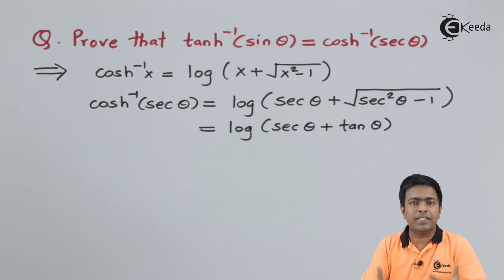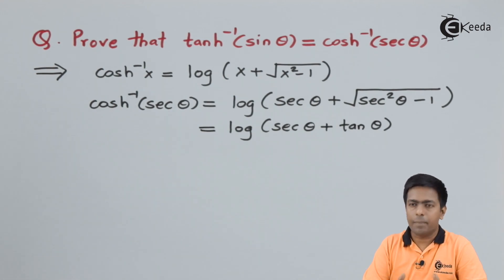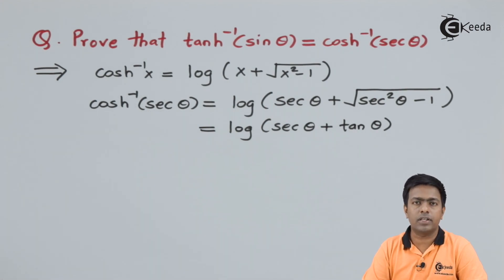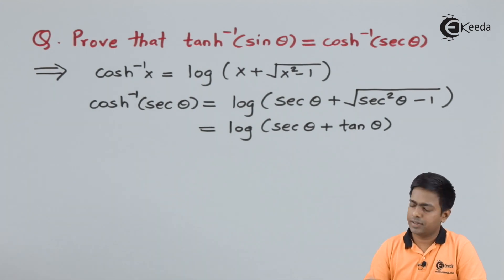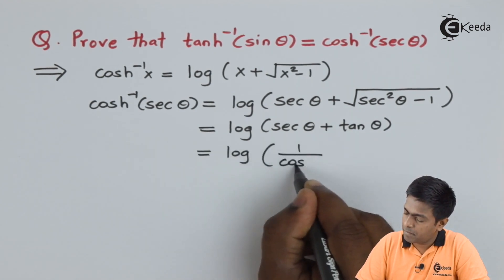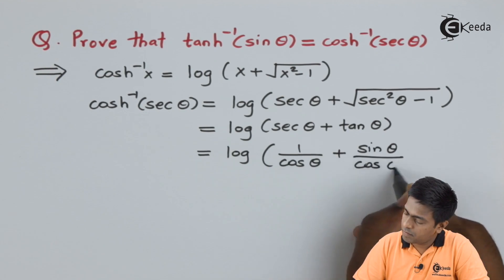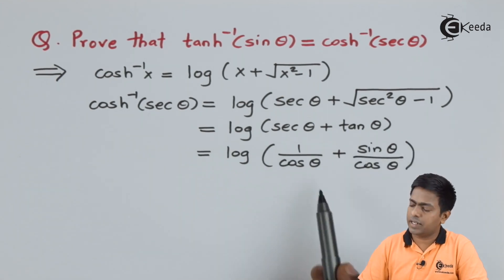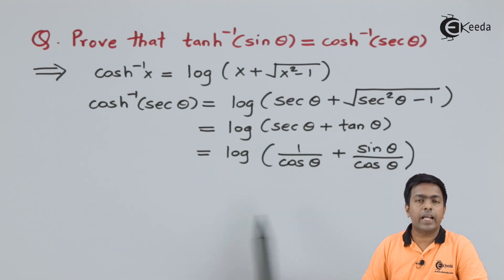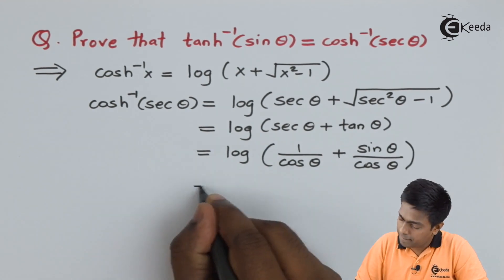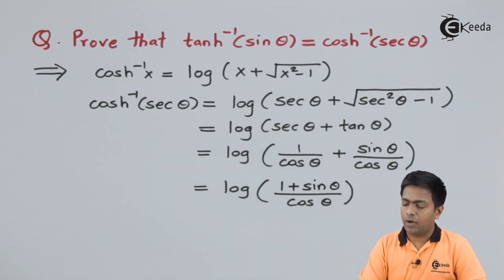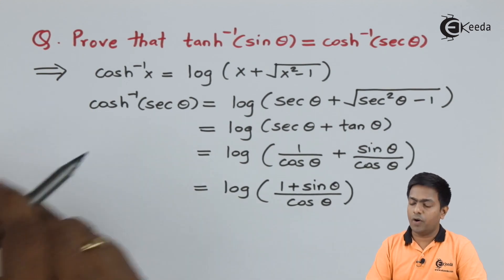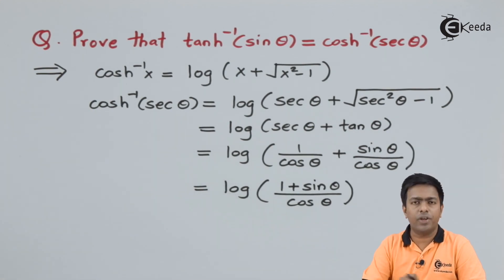We can minimize further because sec θ = 1/cos θ and tan θ = sin θ/cos θ, so both terms have cos θ in the denominator. Taking the common denominator, we get log of (1 + sin θ)/cos θ. This is the value of the right hand side, so I'll stop here and move to the left hand side.